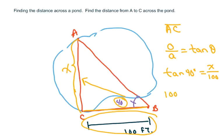So 100 times tan, I'm just cross-multiplying, tan of 40 degrees is approximately, I already worked this out, 83.91 feet.